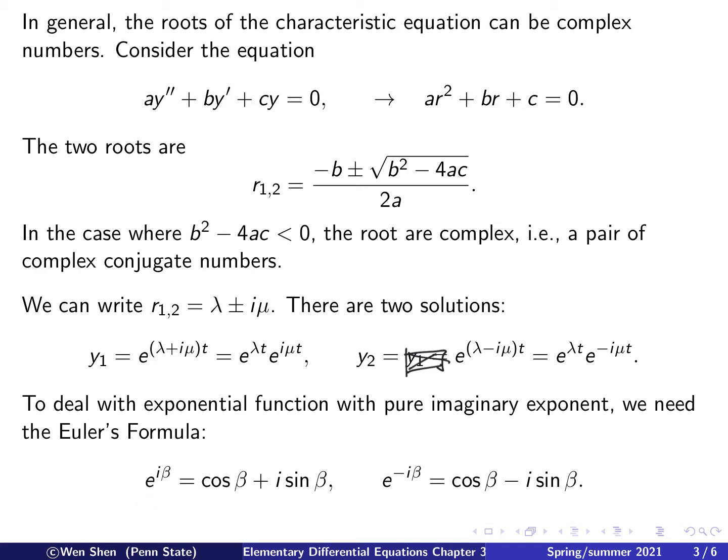Euler's formula states that e to the i beta, where beta is a real number and i is the imaginary number, equals cosine beta plus i times sine beta. This helps us deal with the imaginary exponential. For the negative case, e to the negative i beta equals cosine beta minus i sine beta, since cosine is an even function and sine is an odd function.